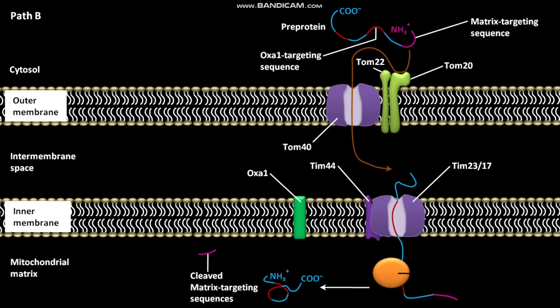The intermediate protein then interacts with OXA1 protein and perhaps with other intermembrane proteins present in the inner membrane of mitochondrion. After this interaction, the intermediate protein is inserted into the inner membrane of mitochondrion. ATP-synthase subunit 9 is transported by path B.